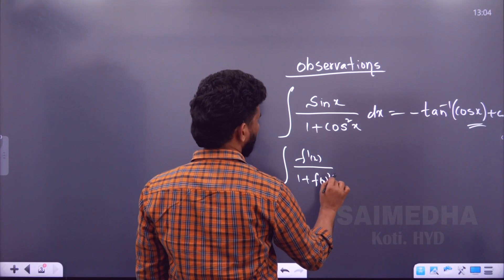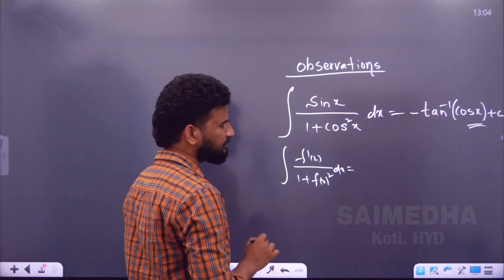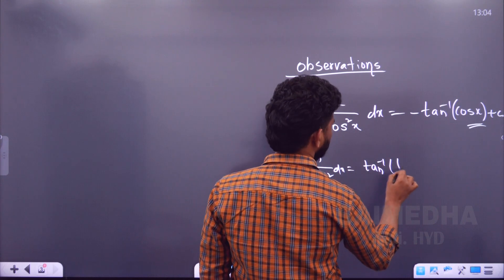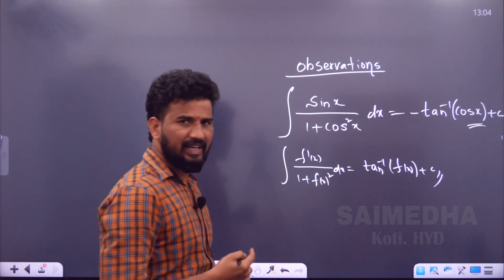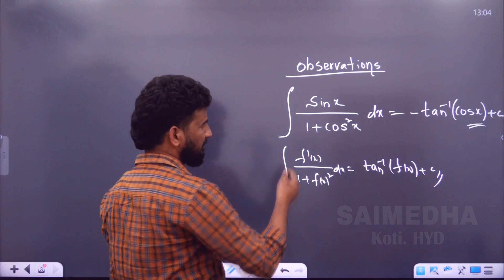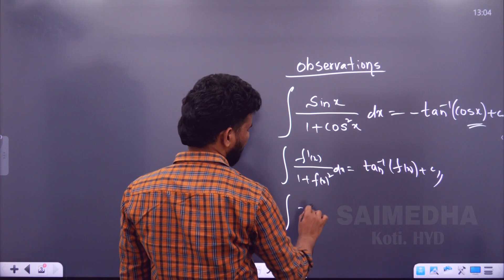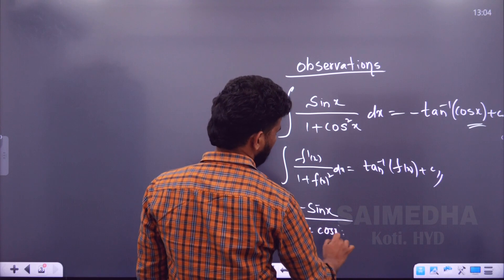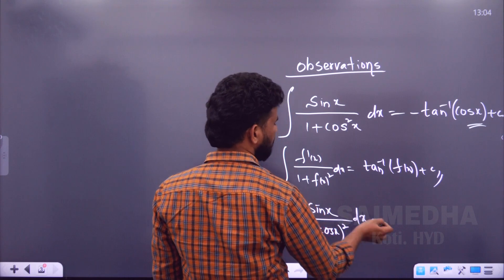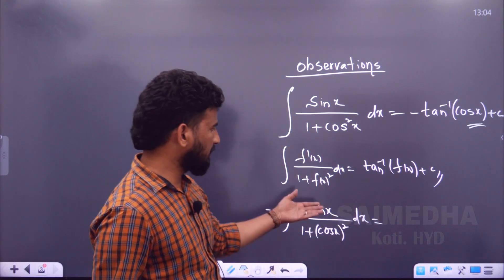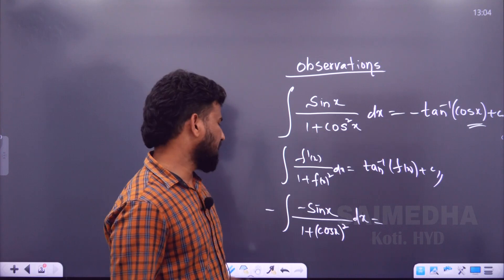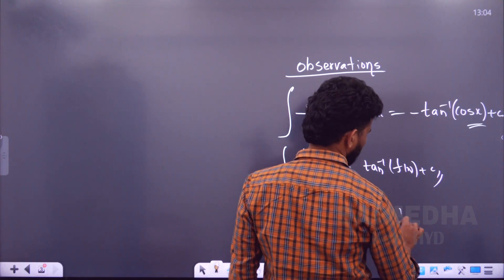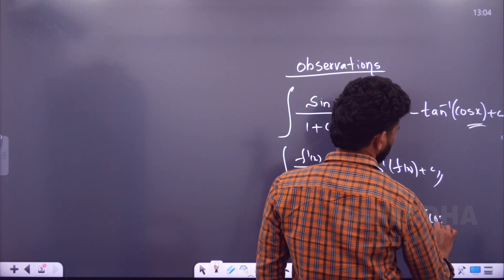Do you have f dash of x in the numerator? No. If you call f dash of x as minus, then we will multiply it internally. The derivative of cos x is minus sin x. Using the formula f dash of x divided by 1 plus f of x whole square, the integral equals tan inverse of f(x). So the answer becomes minus tan inverse of cos x plus c.